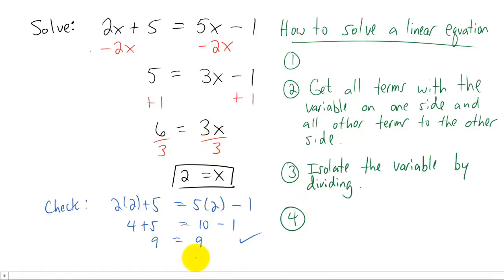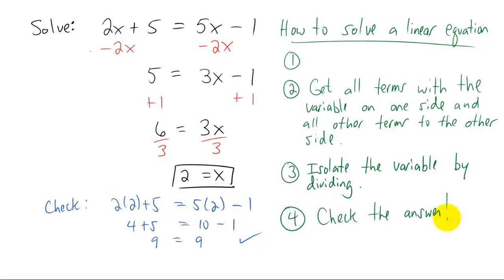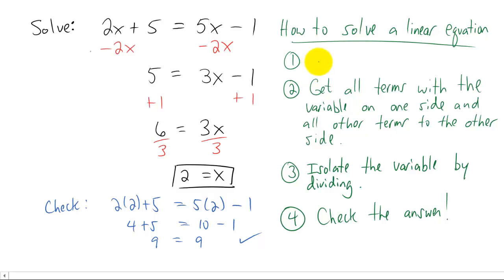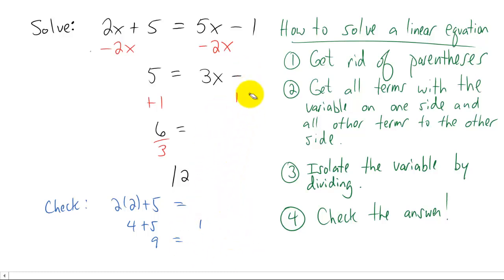Now let's write down some steps we can use to solve every linear equation. Step 1 is a surprise for later. Step 2: get all terms with the variable on one side of the equation, and all other terms on the other side. Step 3: isolate the variable by dividing through by the number in front of it. Step 4: always check your answer.